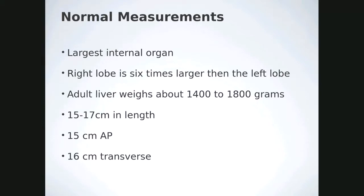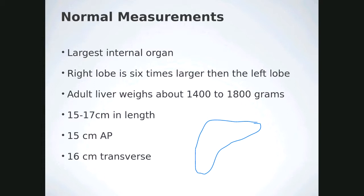The liver is the largest internal organ; the right lobe is six times larger than the left, weighing about 1400 to 1800 grams in adults. The most common measurement performed in the field is the AP measurement of the right lobe. The transverse measurement is 16 centimeters. Be familiar with normal measurements and perform whatever measurements are requested.